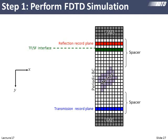Here's how I envision the grid. We still have space between the device and the PML — we'll get to why. We have a source injection plane: below this line is the total field, above is the scattered field. A reflection record plane cuts a complete cross section through the grid, and we calculate Fourier transforms at each point for each frequency. Similarly, we have a transmission record plane. Periodic boundary conditions are on left and right; PMLs absorb at top and bottom.